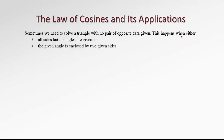This situation happens when either all sides but no angles are given. For example, maybe this is 8, 7, 5, and we need to find angles. Observe that there is not even one pair of opposite data given, so there is no way of applying the sine law.